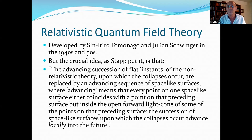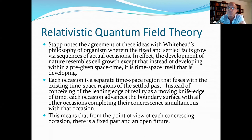Now, if that's completely unintelligible, I'll try to make some sense out of it, and I hope Tom will as well. Stapp notes the agreement of these ideas with Whitehead's philosophy of organism, wherein the fixed and settled facts grow via sequences of actual occasions. In effect, the development of nature resembles cell growth, except that instead of developing within a pre-given space-time, it is time-space itself that is developing. Each occasion is a separate time-space region that fuses with the existing time-space regions of the settled past. So instead of conceiving of the leading edge of reality as a moving knife edge of time, each occasion advances the boundary surface with all the other occasions completing their concrescences simultaneously with that occasion.